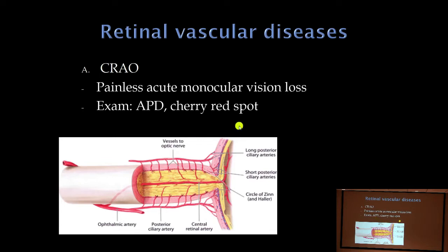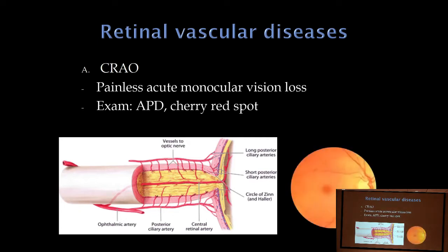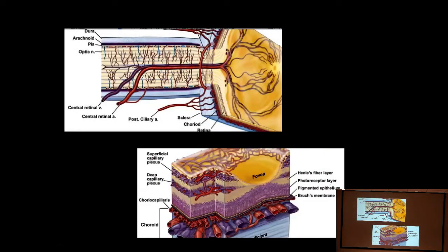High-yield for boards: a cherry red spot when you look in the eye. With diffuse retinal ischemia, the retina takes on a pale appearance, but the fovea jumps out — that's the cherry red spot. The posterior ciliary artery supplies the choroid, and the retinal layer over the fovea is extremely thin. So with diffuse retinal ischemia, you can see the vascular choroid through the fovea — that vascularity stands out as the cherry red spot, supporting the diagnosis of central retinal artery occlusion.